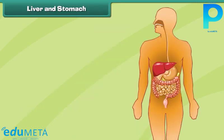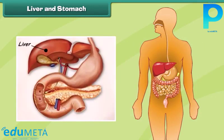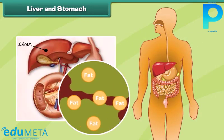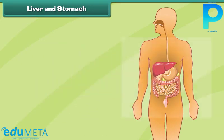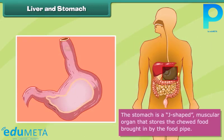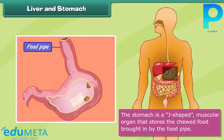The liver is a secretory organ that produces many juices that help in digesting food. The stomach is a J-shaped muscular organ that stores the chewed food brought in by the food pipe. The food is digested in the stomach with the help of enzymes and acids present there.